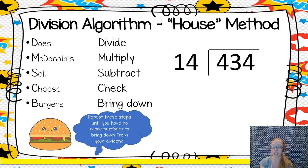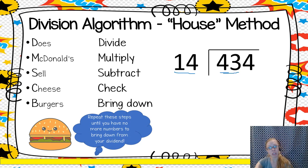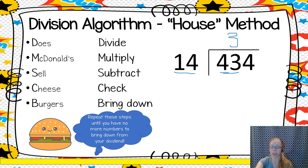Step number one when working with this kind of problem is to divide — I'm looking to see what my divisor can fit into. I start by thinking: 4 divided by 14. No, that's not going to work because 4 is smaller than 14, so I need to extend this a little bit. 43 divided by 14 — that's big enough. So how many times can 14 fit into 43? Let's try three times. I put that on the top of my house.